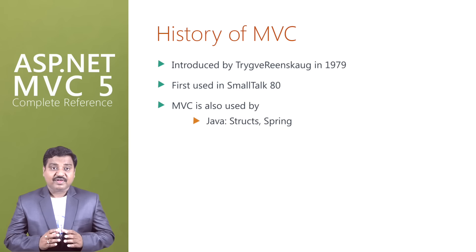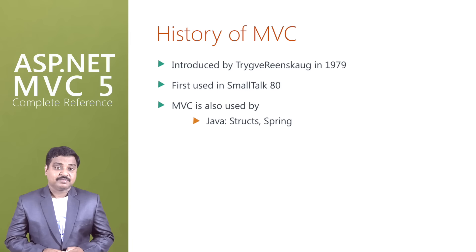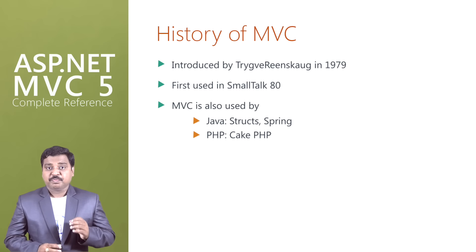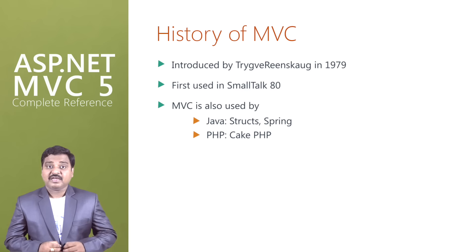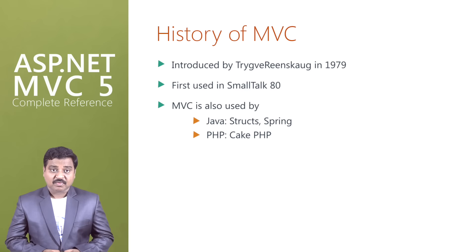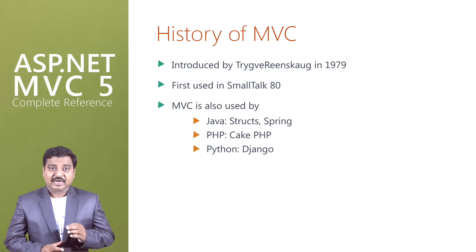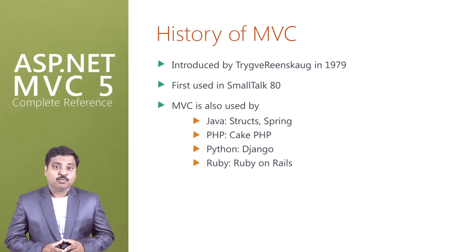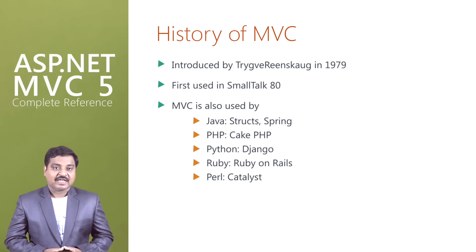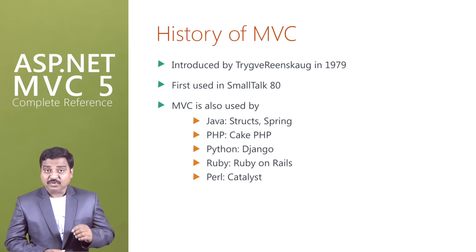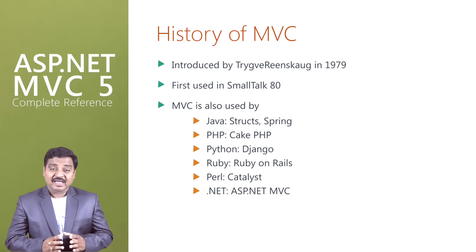In Java, we have Struts and Spring. In PHP, we have CakePHP and PHP MVC. For Python, we have Django. For Ruby, we have Ruby on Rails. For Perl, we have Catalyst. And for .NET, we have ASP.NET MVC.